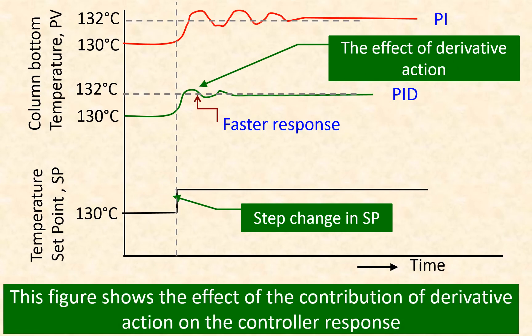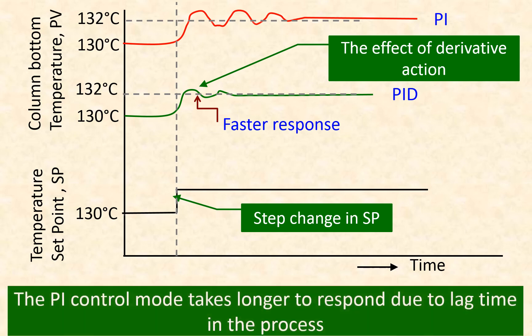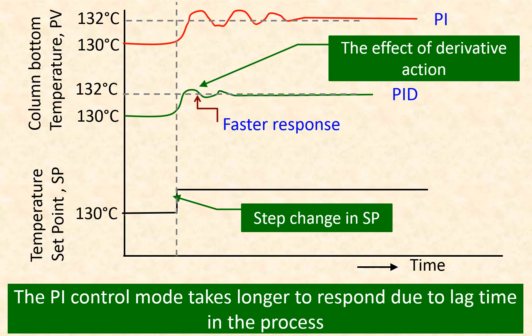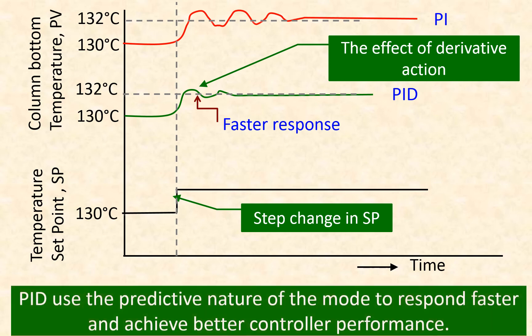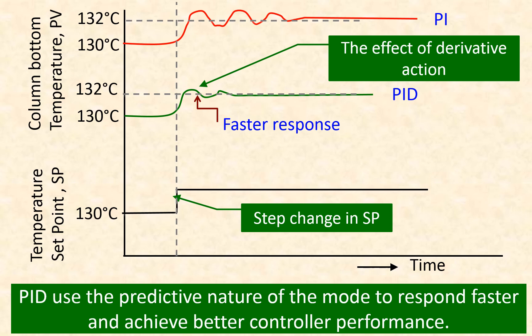This figure shows the effect of the contribution of the derivative action on the PID control response. The PI control mode takes longer to respond due to lag time in the process. The PID control mode uses the predictive nature of the derivative mode to respond faster and achieve better controller performance.